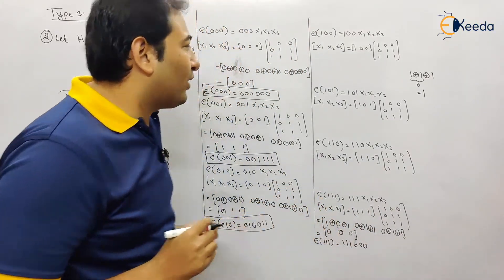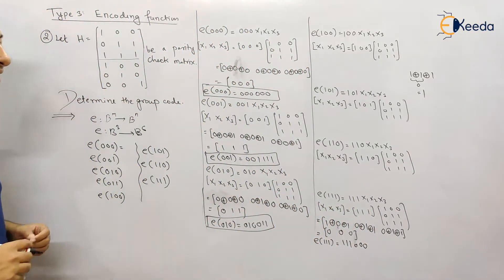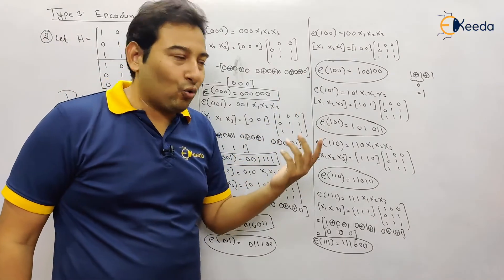So likewise, we are going to calculate all the remaining entries. Is this clear? So let me directly write it down answer for you. So these are the answers of all the codes.